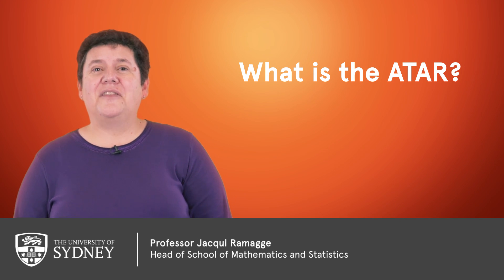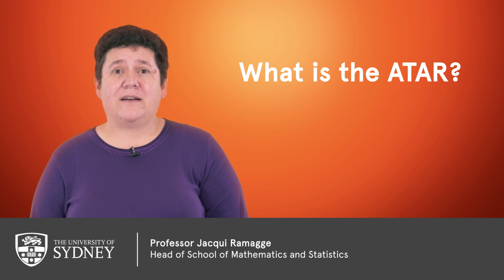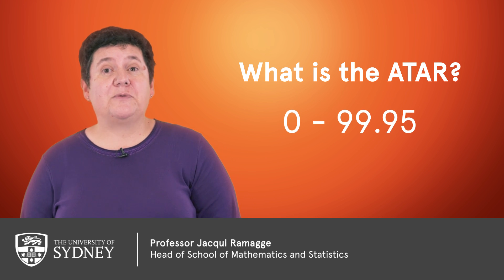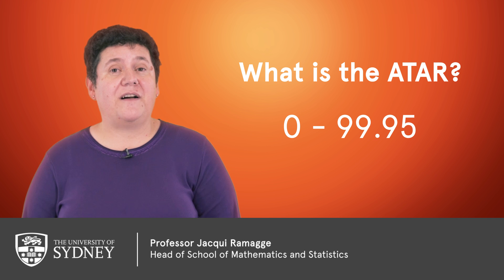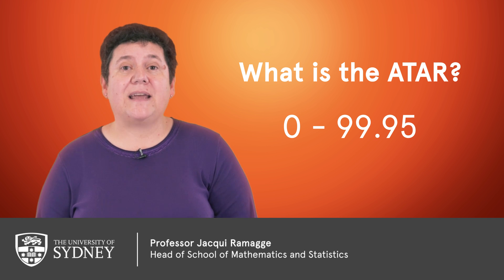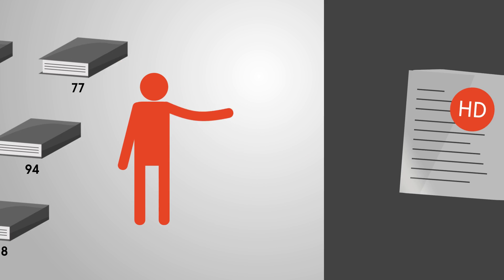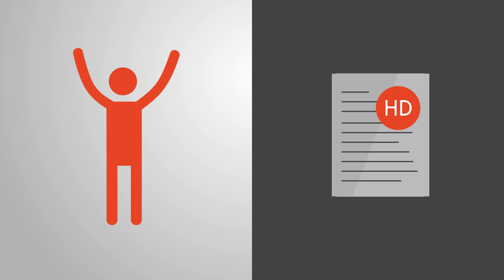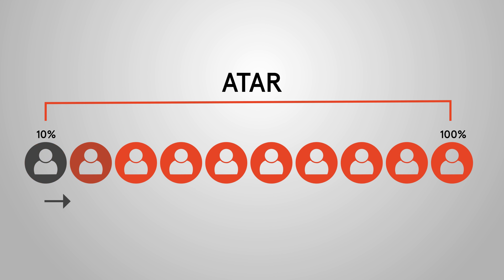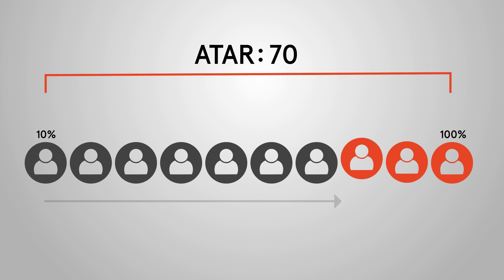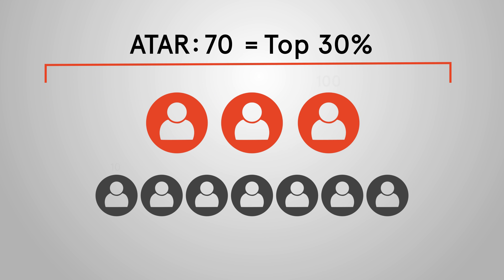What is the ATAR? The Australian Tertiary Admissions Rank, or ATAR, is a number between 0 and 99.95 that tells you where you rank in your year group. It's based on overall academic performance and is designed to be a predictor of your first-year performance at uni. Your ATAR is your percentile position out of all students who started Year 7 with you. So an ATAR of 70 doesn't mean you got 70% — it means you're in the top 30% of your year group.